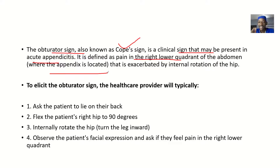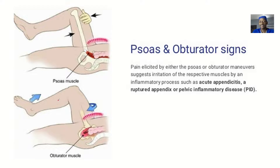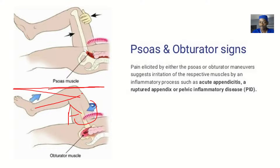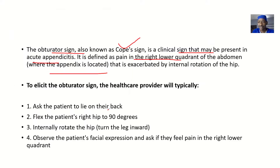The pain is exacerbated by internal rotation of the hip. When the patient raises their leg, you ask them to rotate internally. You can also ask them to shift back and forth, but the most important maneuver is internal rotation. If there's acute appendicitis, there will be significant pain.